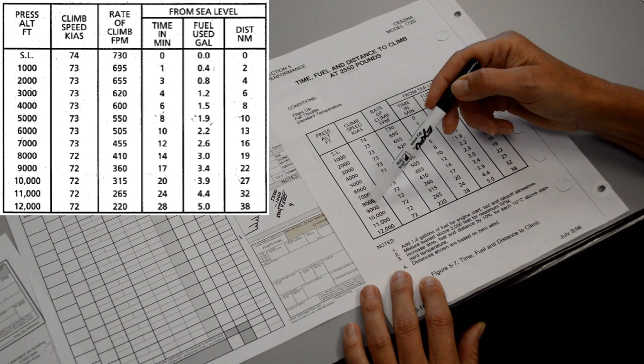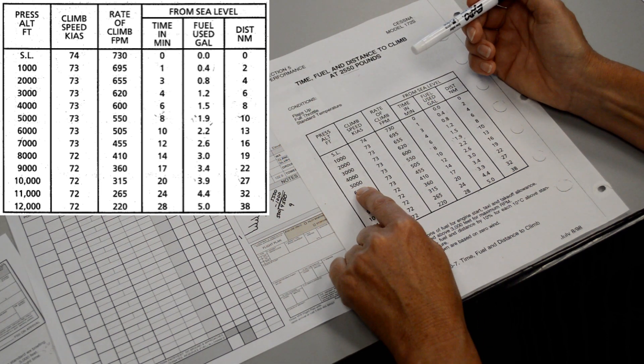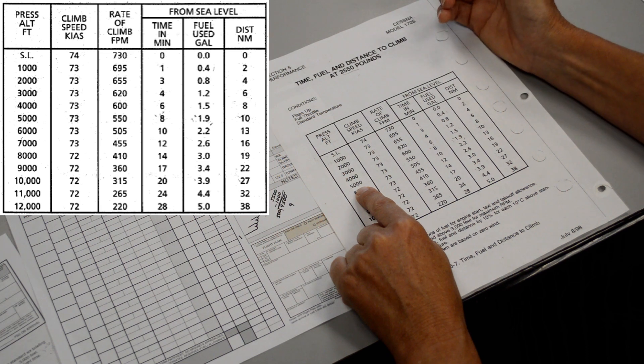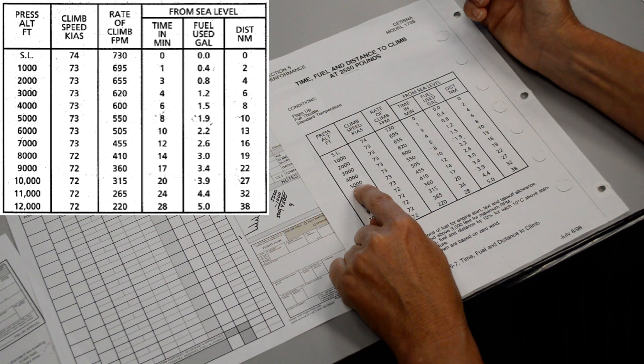We have to go to our pressure altitude column and we said that we want to climb to 5,500 but our pressure altitude was actually 5,000. So 5,000 is what we're actually climbing to.